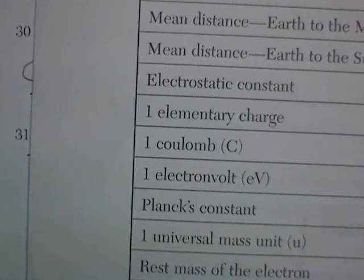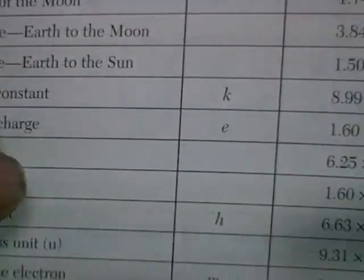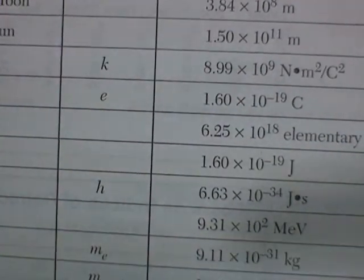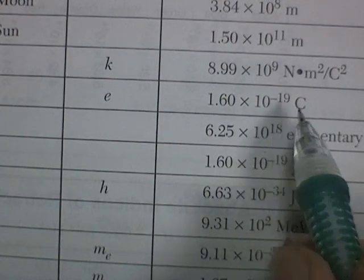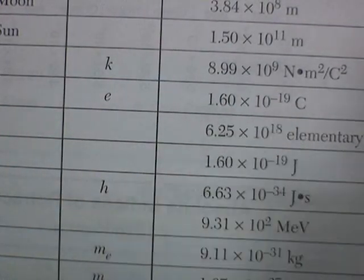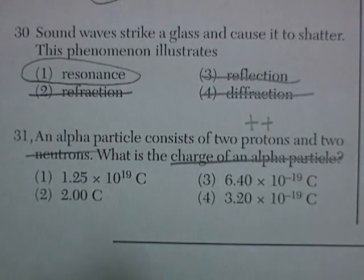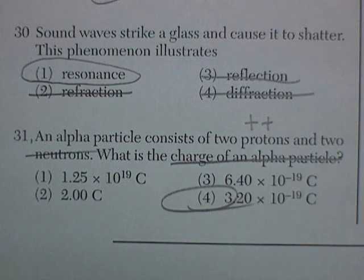We can find an elementary charge. A single charge is 1.6 times 10 to the negative 19 coulombs. So two of those would be about 3.2 times 10 to the negative 19. Let's see if that's a choice — yes, of course it is.